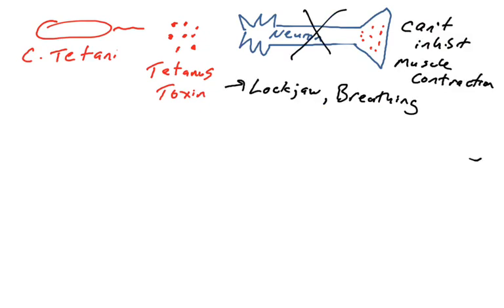The tetanus toxin interferes with motor neurons. Specifically, it interferes with motor neurons' ability to inhibit muscle contraction. When you want to contract your muscles and when you want to relax your muscles, you need to send the signals to your muscles. The tetanus toxin interferes with these signals, inhibiting the inhibition of muscle contraction. So you end up getting muscles that can't contract.